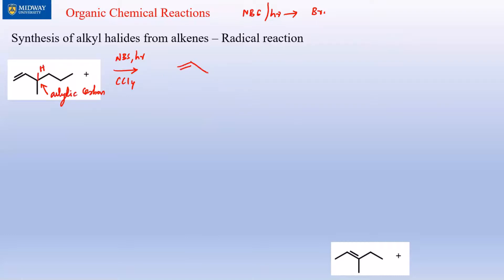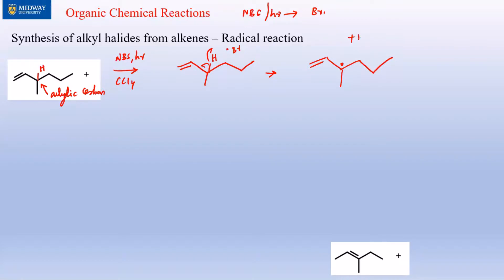The allylic carbon must also contain a hydrogen. This carbon is allylic and contains one hydrogen, so that's where we break the C–H bond. It gets broken in two pieces, leaving a radical on that carbon, and the hydrogen combines with Br• to produce HBr.